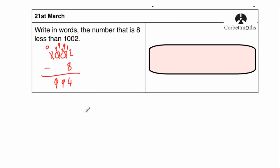Another way you could have done it: we're looking for the number that's 8 less than 1002. I personally would have just taken away 10 from 1002 to get 992. And that's 10 less. So I'd add 2 back on.